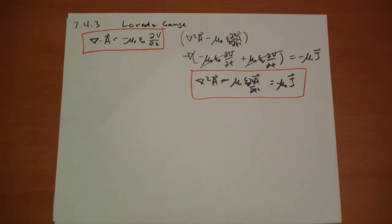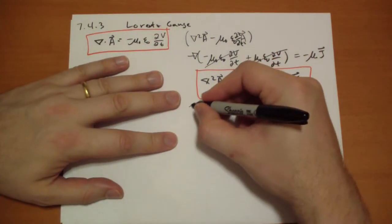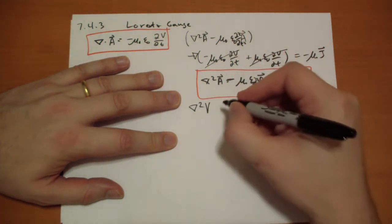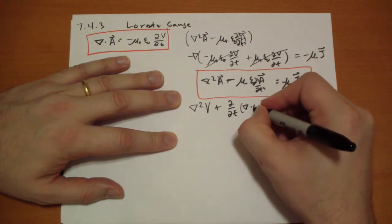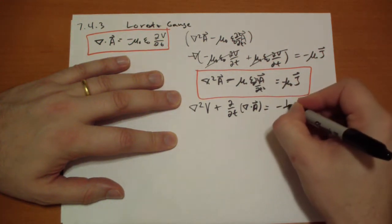What happens when we plug it into Gauss's law? Well, before we had the Laplacian of V plus the time derivative of the divergence of A is equal to minus 1 over epsilon naught the charge density.